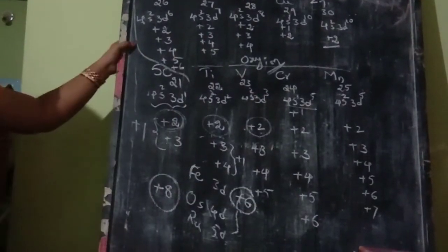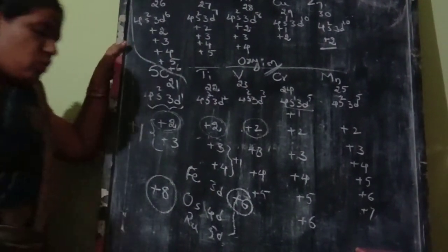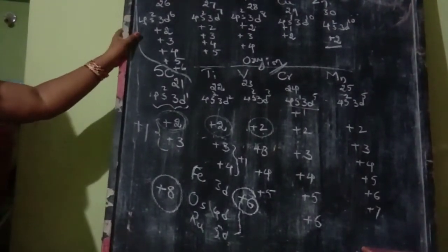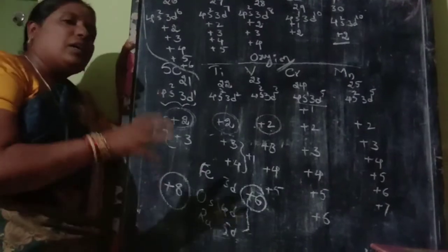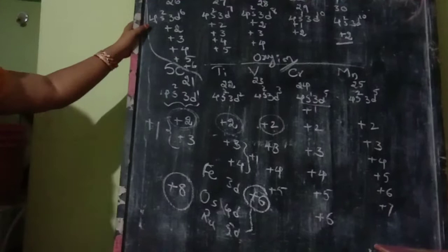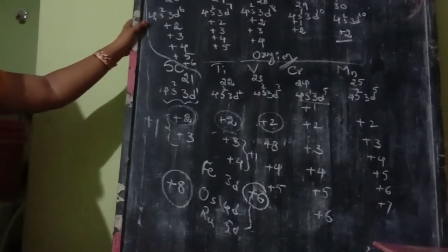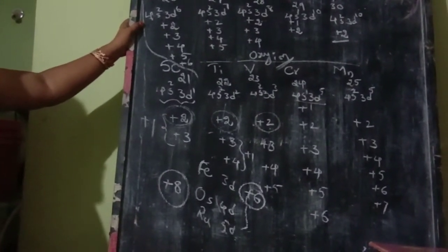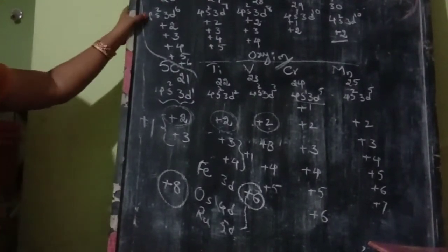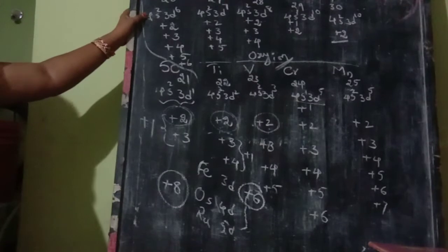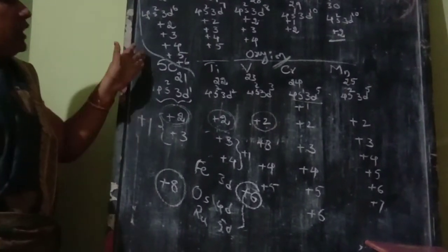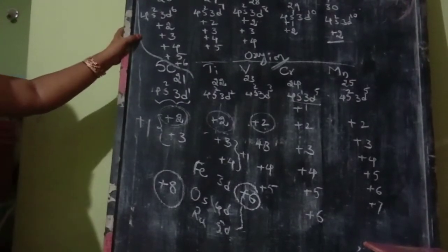The reason D-block elements exhibit variable oxidation states is that in the outermost orbit, the (n-1)D orbitals are close in energy to the nS orbitals and can be vacated. This small energy difference between (n-1)D and nS allows D-block elements to show variable oxidation states.